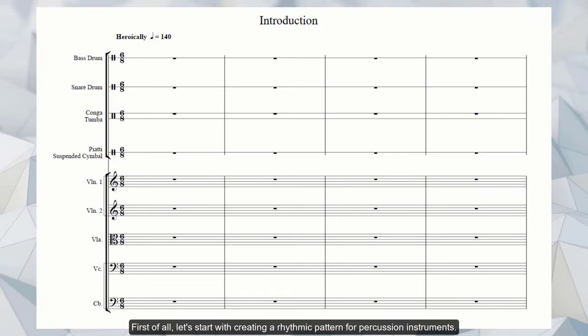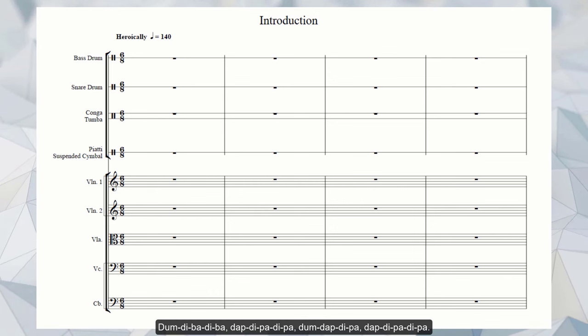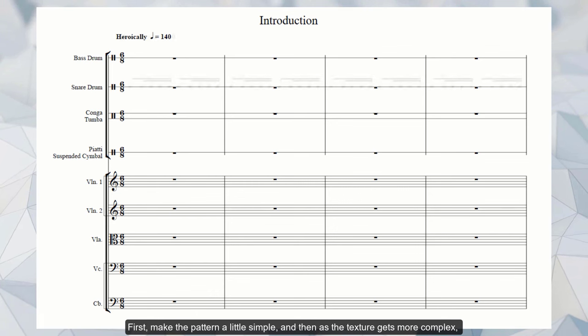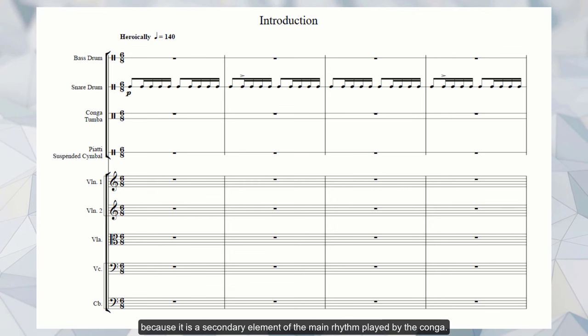First of all, let's start with creating a rhythmic pattern for percussion instruments. Of course, the rhythm we choose will determine how the orchestration will develop. I think of a figure in the combination of two instruments, the snare drum and congas. This is a common ethnical rhythm of many peoples, including Azerbaijan. First, make the pattern a little simple and then, as the texture gets more complex, we will enrich it with melismas. The dynamic for the snare drum will be piano because it is the secondary element of the main rhythm played by the conga.